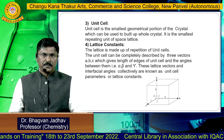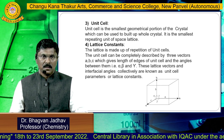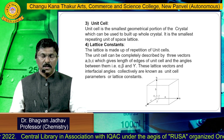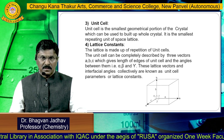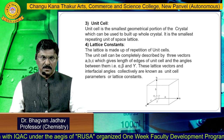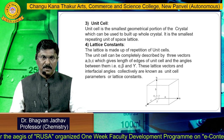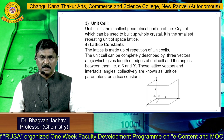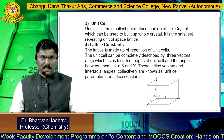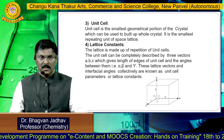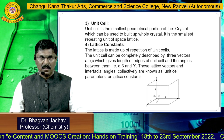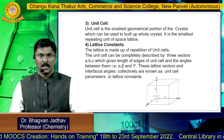The third term is the unit cell. The unit cell is the smallest geometrical portion of the crystal which can be used to build up a whole crystal, or it is the smallest repeating unit of a space lattice. The fourth term is the lattice constants. The lattice is made up of regular, repetitive unit cells, and a unit cell can be completely described by three vectors a, b, and c, which give the lengths of the edges of a unit cell, and the angles between them are alpha, beta, and gamma. These lattice vectors a, b, c and the interfacial angles alpha, beta, and gamma collectively are known as unit cell parameters or lattice constants.